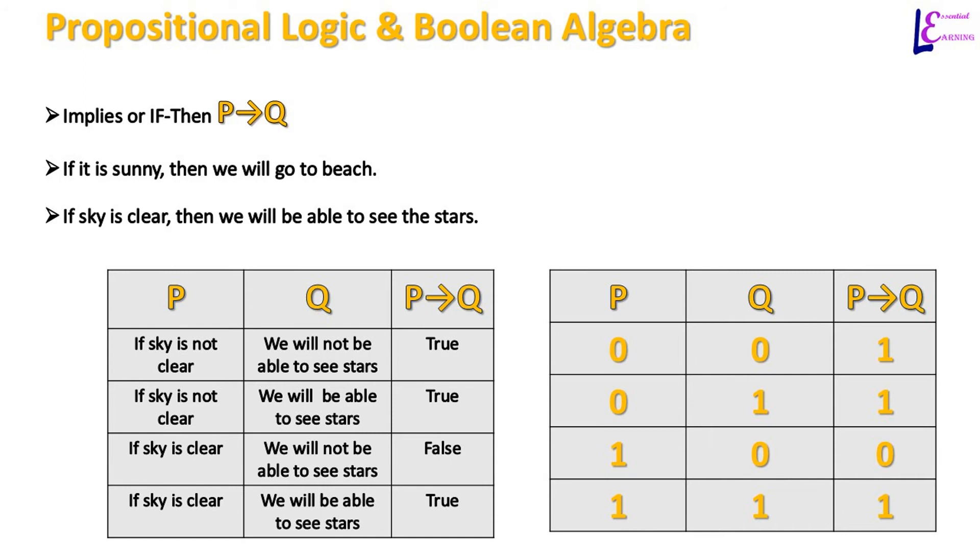Implication in logic is a relationship between two propositions in which second proposition is logical consequence of the first. Simple implication is also known as if-then proposition. Consider the following statements: If it is sunny, then we will go to the beach. If the sky is clear, then we will be able to see the stars.